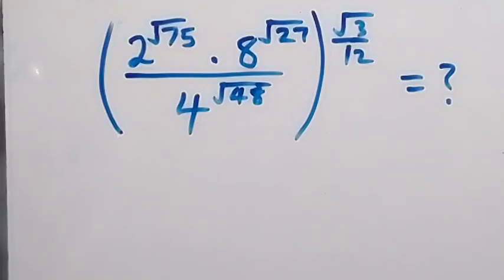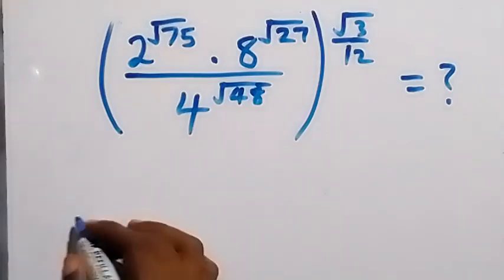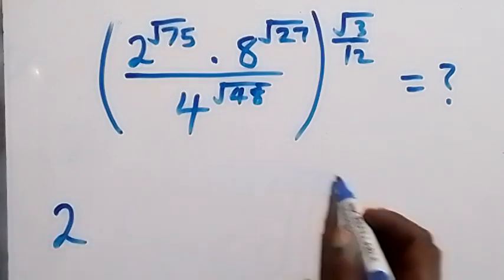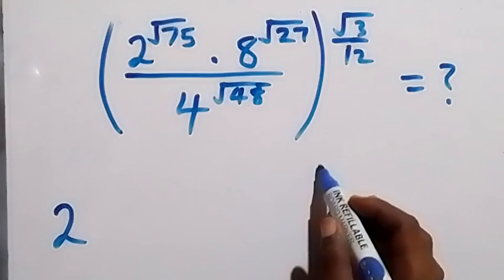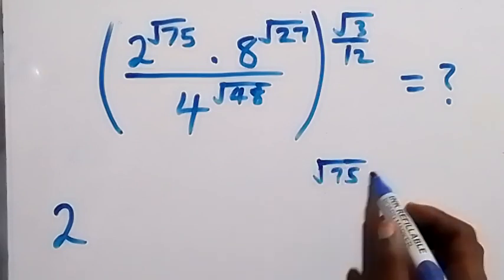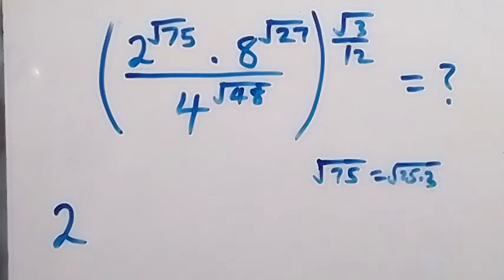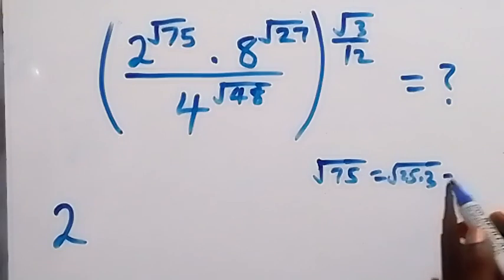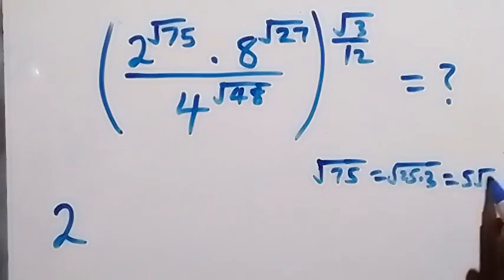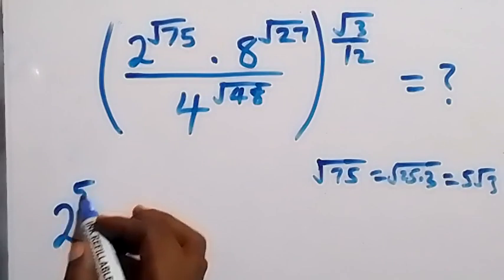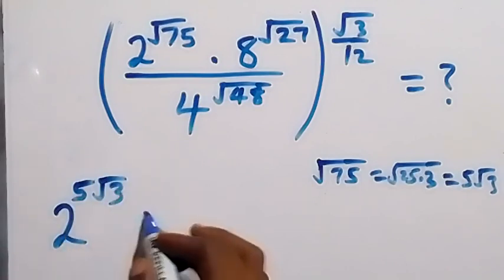Hello, you are welcome. How to solve this nice math problem involving square root. Let's write 2 raised to power root 75. We can write root 75 as root 25 times 3. Root 25 is 5, so root 75 becomes 5 root 3. Instead of writing root 75, we write 5 root 3, so we have 2 raised to power 5 root 3.